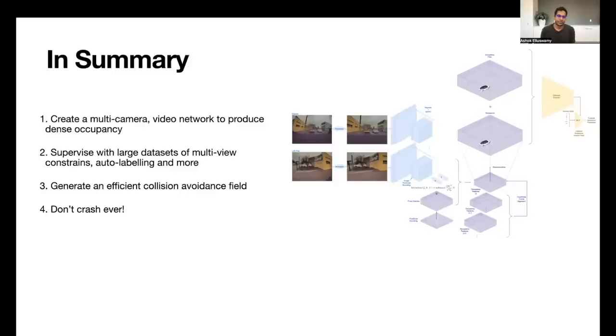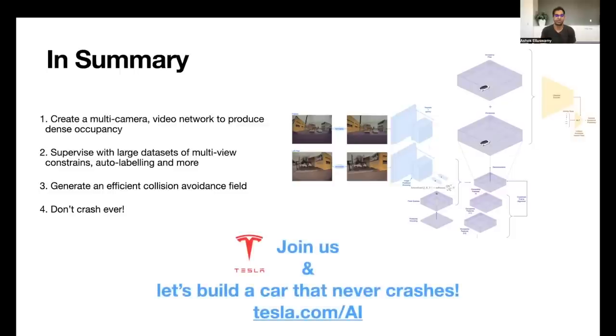So in summary, we showed how we use multi-camera video frameworks to produce dense occupancy and occupancy flow. We also briefly saw how you can use large multi-view constraints from the fleet to supervise this in addition to our auto-label supervision. Once we have this great occupancy, we can plumb this into other neural networks that produce an efficient collision avoidance field. And if we do all of these steps correctly, we can produce a car that doesn't need to crash ever. Maybe one missing piece is more engineers and scientists to work on this problem with us to enable to build this great technology. Thank you.